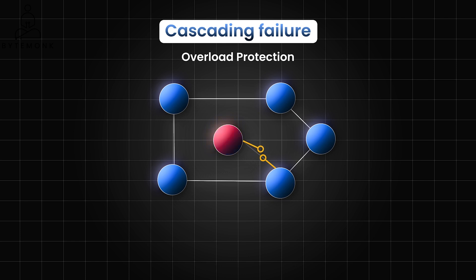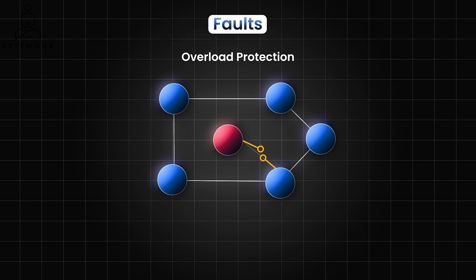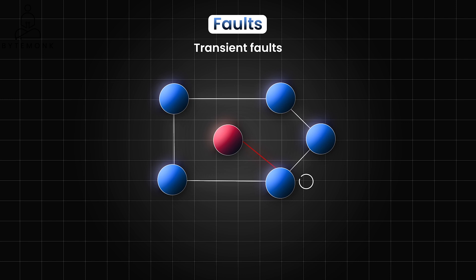The circuit breaker pattern aims to prevent a service from being overwhelmed with requests when a dependent service is slow or unavailable. Especially in distributed systems, the handling of faults is crucial for ensuring reliability and availability. Transient faults are momentary hiccups in a system, like a fleeting network glitch or a brief server overload. The retry pattern is a resiliency strategy where an operation is automatically reattempted after a short delay, allowing the system to recover gracefully from these temporary issues.